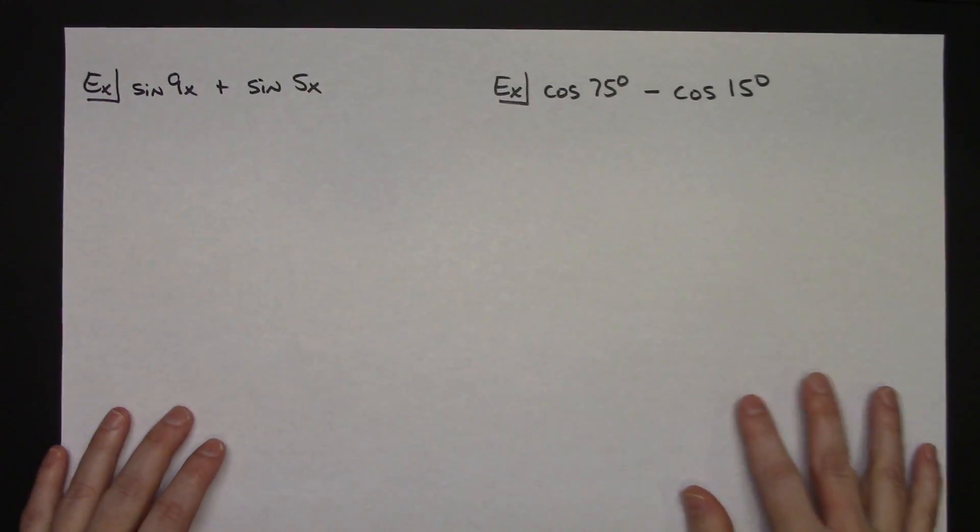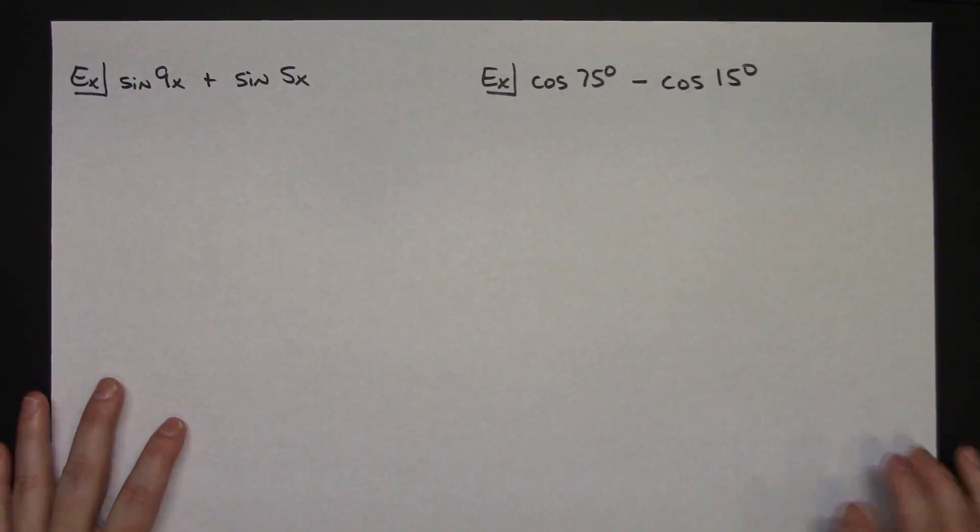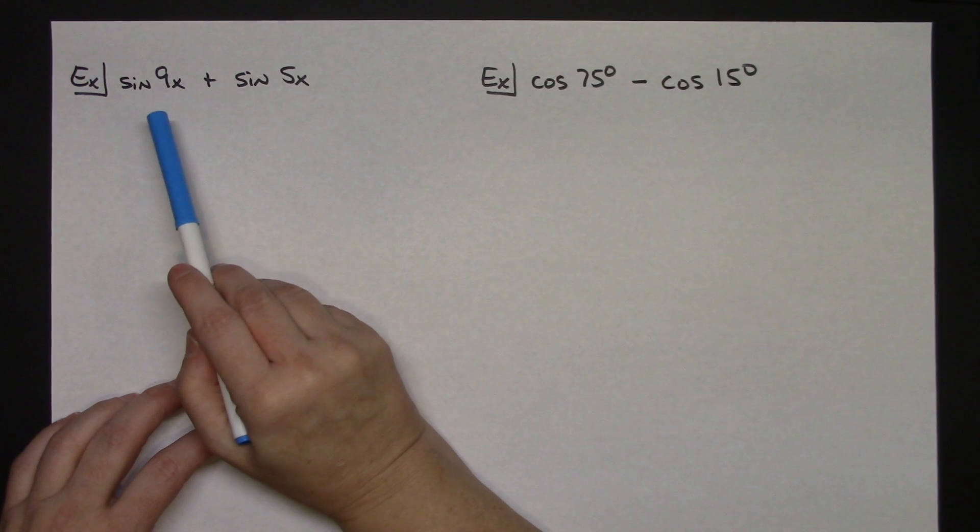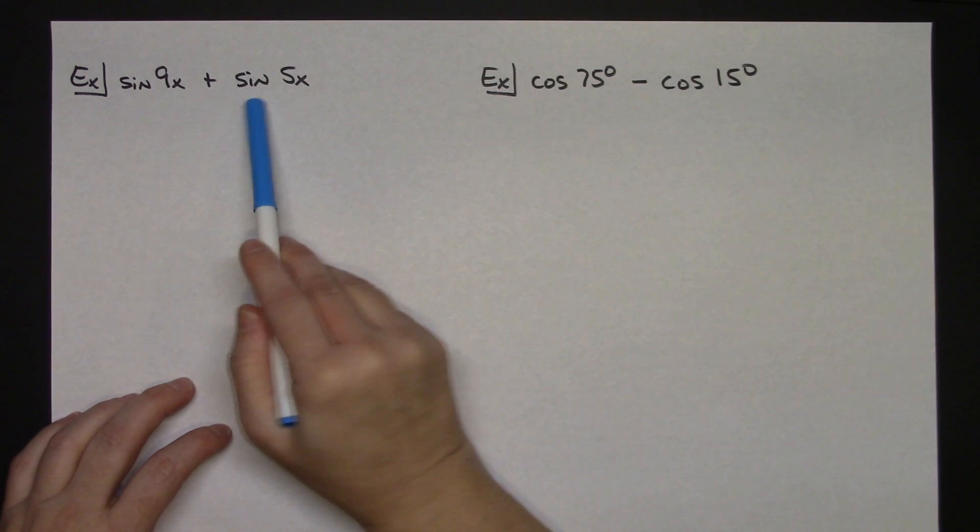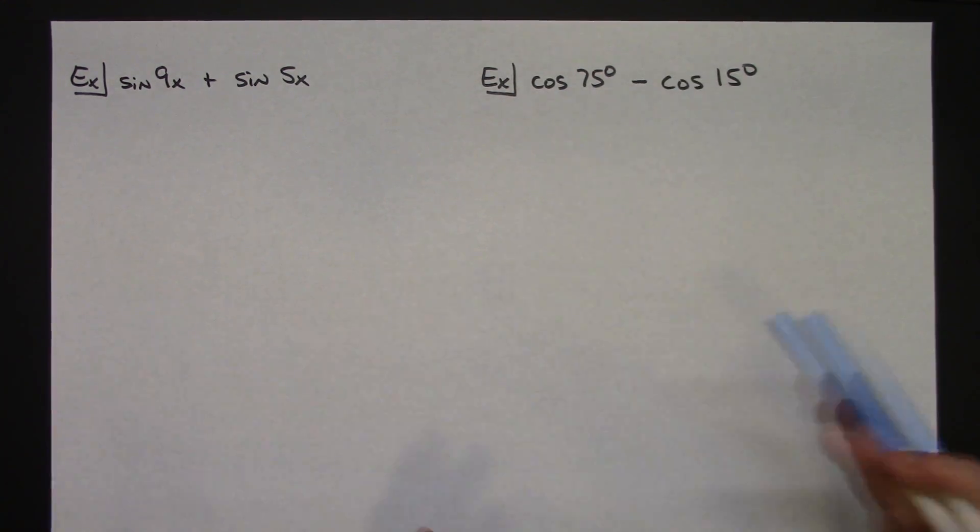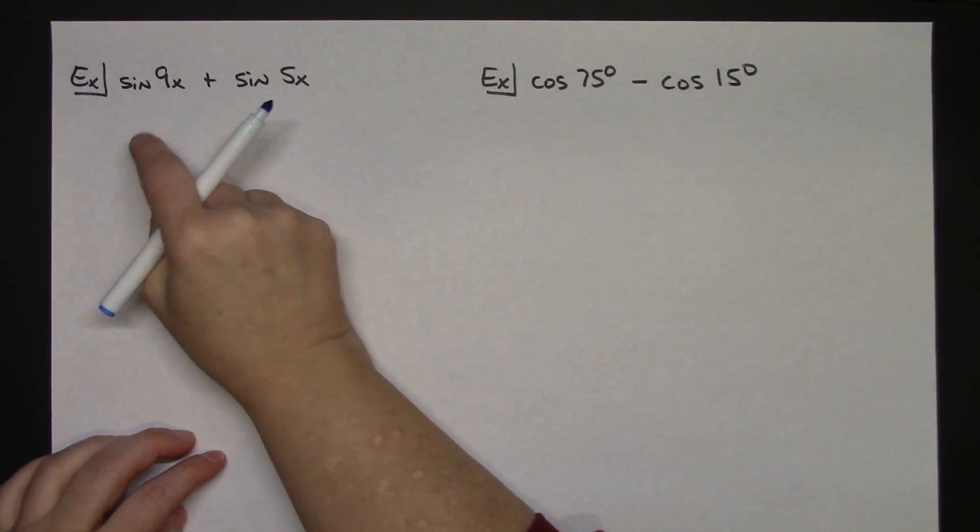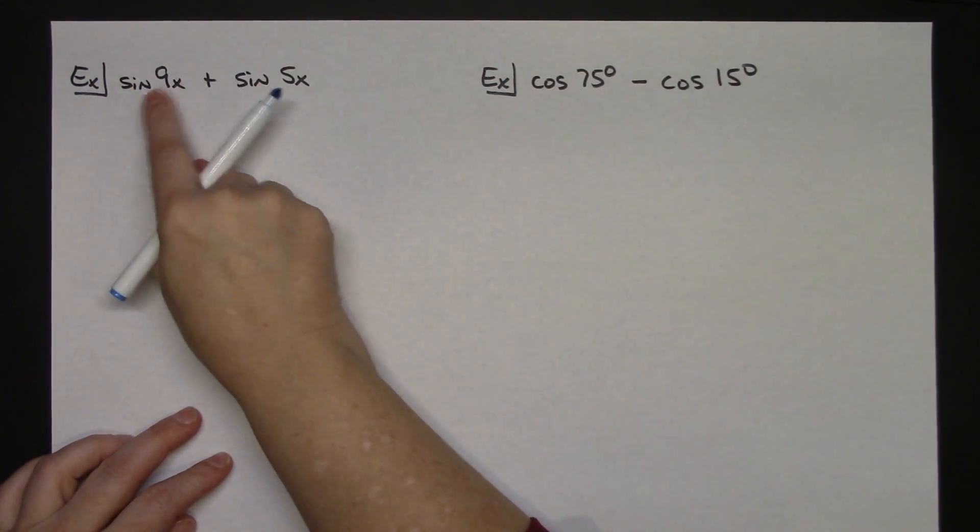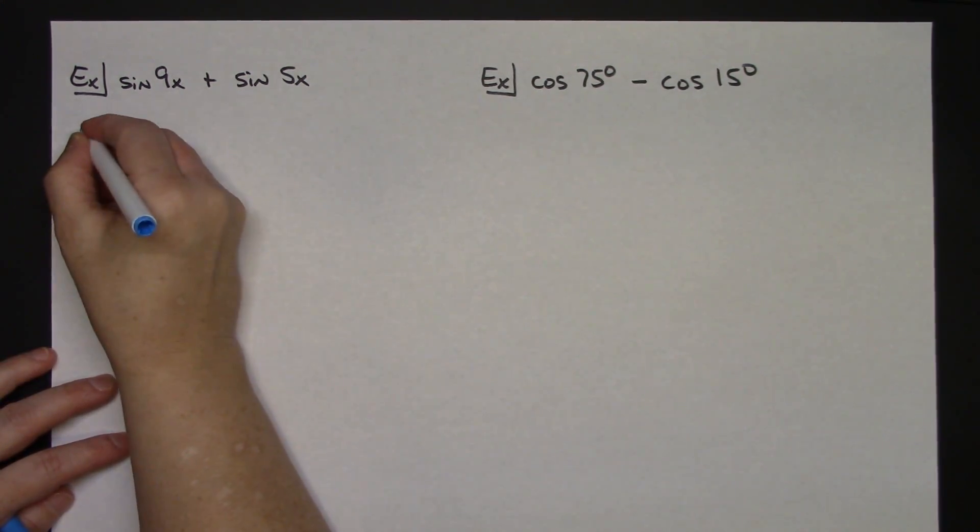For the first two examples I'm going to work on the sum to product formulas. I can look at this, I have a sum so that means I need the sum to product formulas. Over here I've got a difference but sum difference same thing I'm going to go to a product. From that formula sheet that was up just a minute ago I am summing two sines.